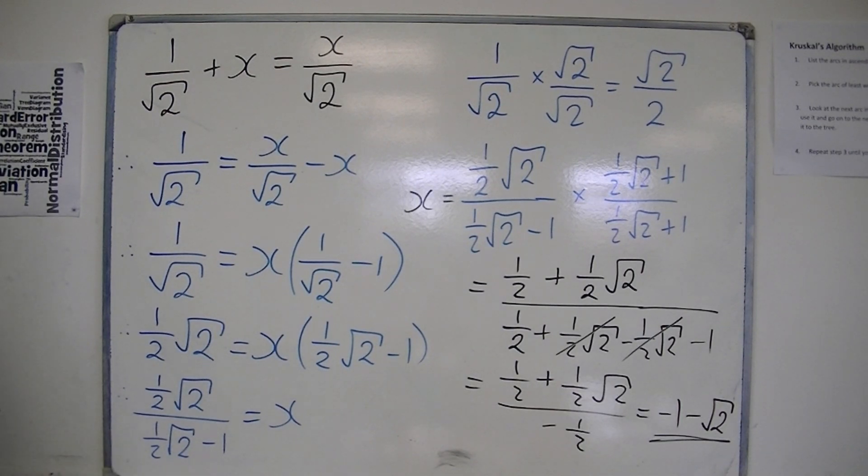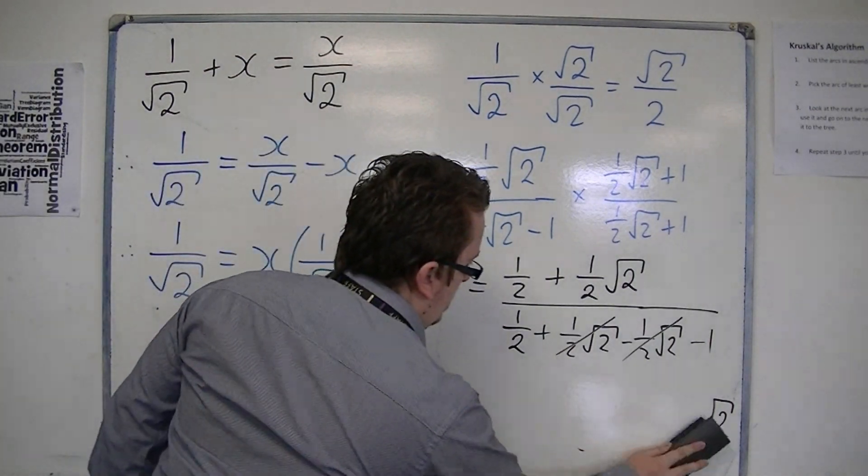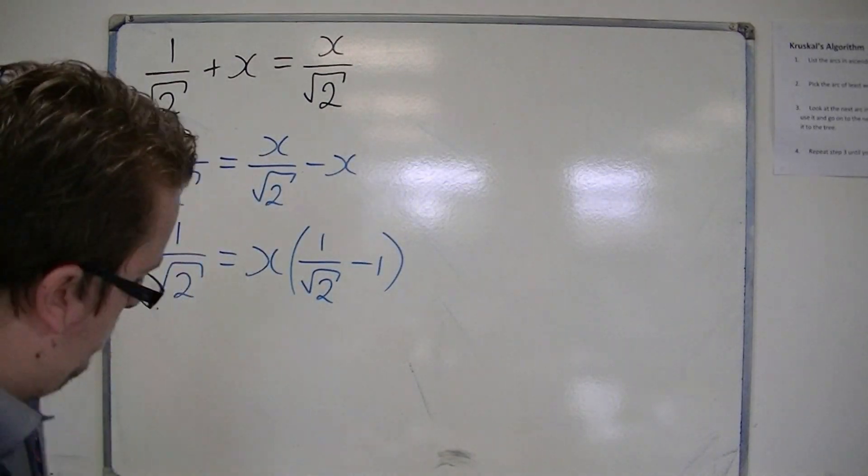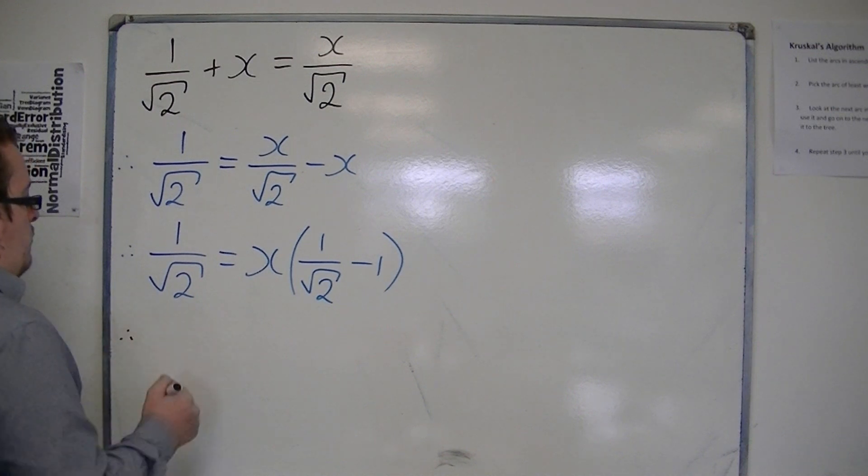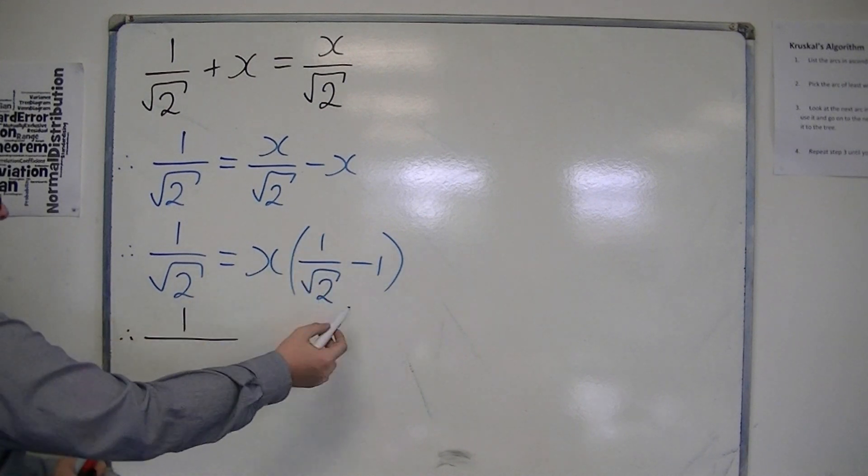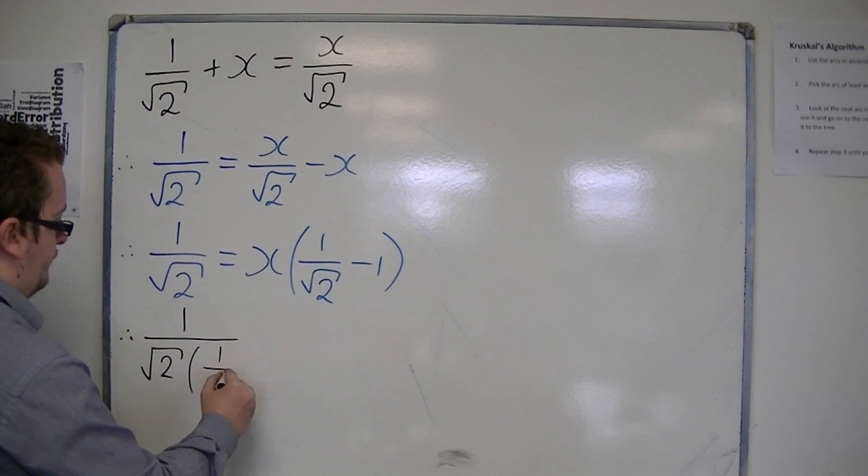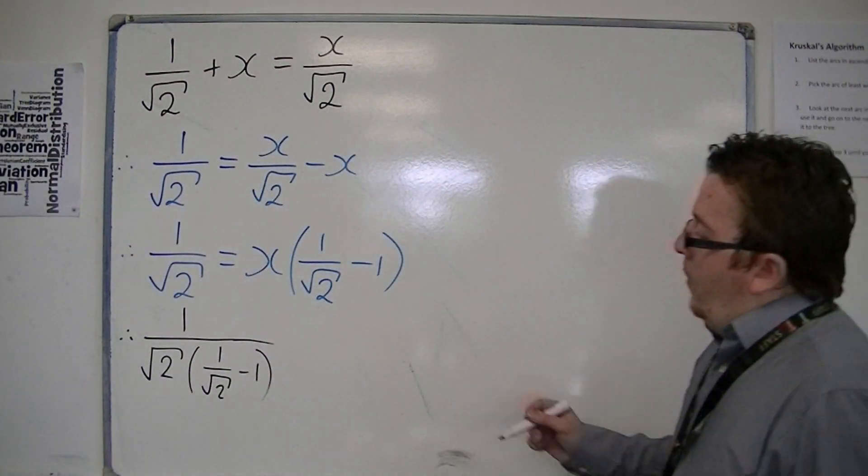Now if you did it the other way, so I'll go back to this step. This is the second method. It might actually be easier. If you did a straight dividing through by 1 over root 2 take away 1, then what happens is that you get 1 over root 2 divided by that is the same as 1 over root 2 times this. It's exactly the same as that, is x.